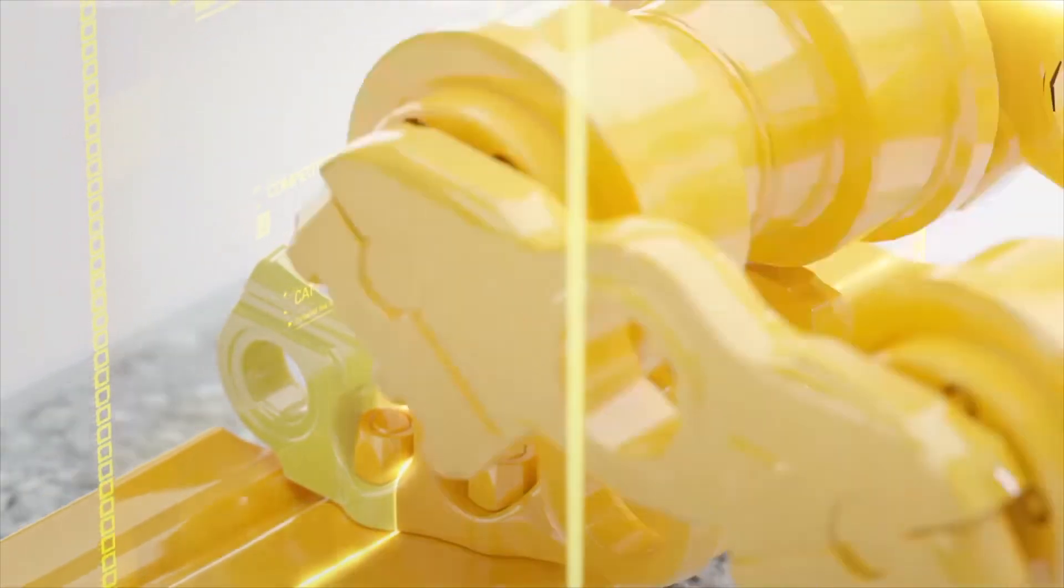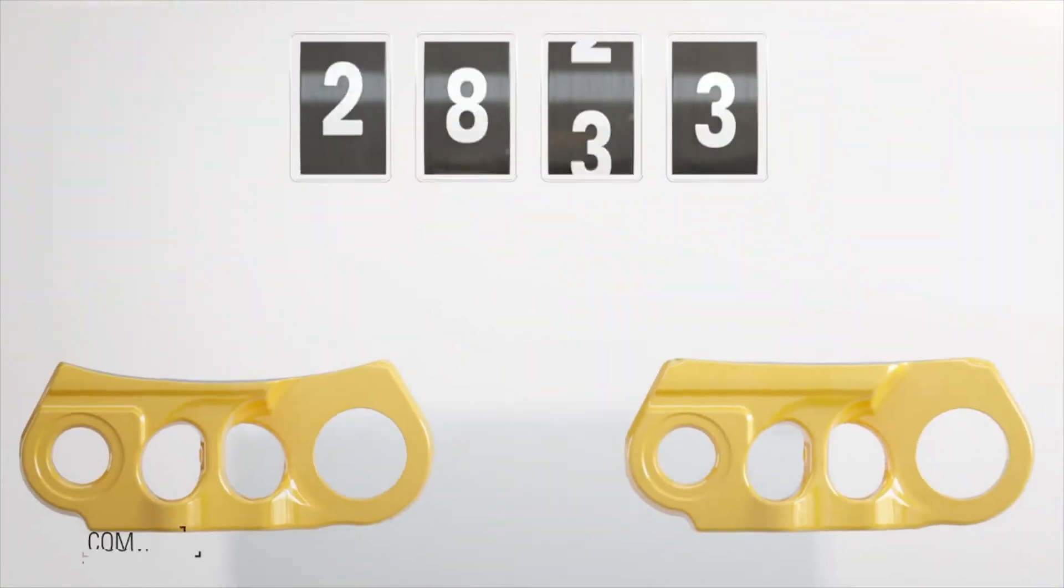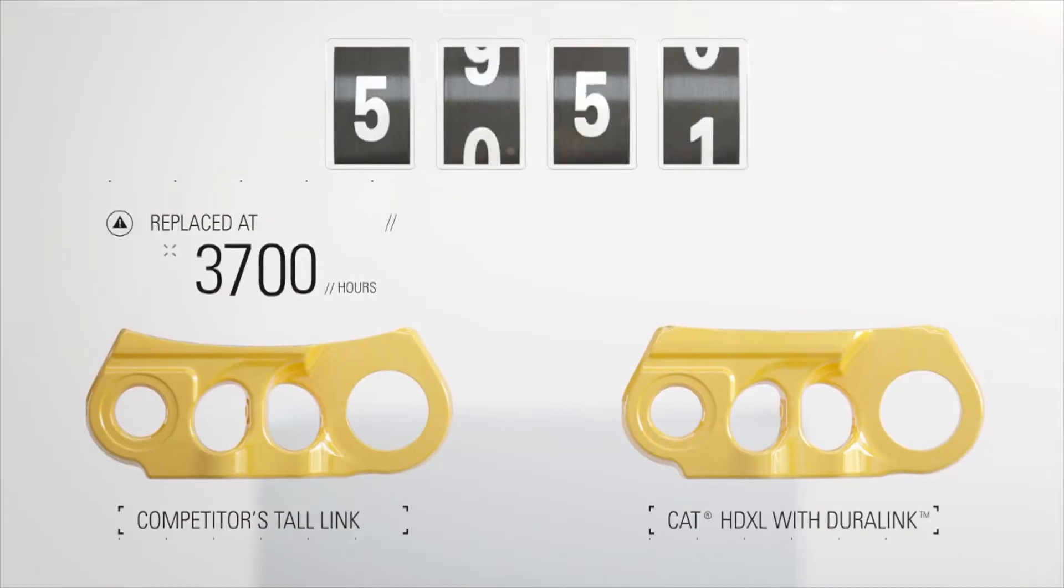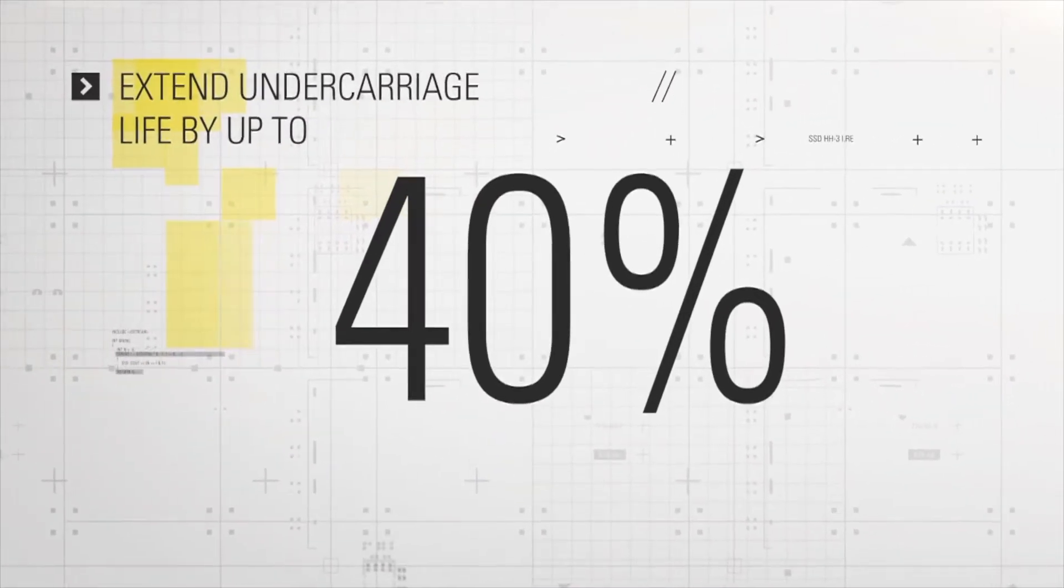Competitive tall links, on the other hand, start out at that flat surface level. Scalloping starts right away and intensifies over time. When you simulate operating workloads, it's easy to see how choosing Caterpillar can extend undercarriage life by up to 40%.